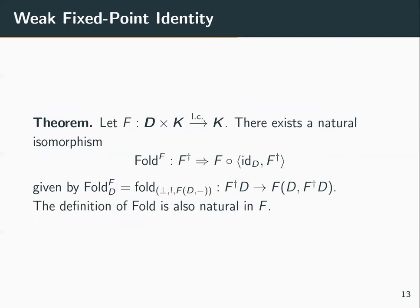Parametrized fixed point operators typically satisfy the fixed point identity. In the case of functors, we have a fixed point identity but only up to natural isomorphism. Given a functor F from D × K to K, we have a natural isomorphism fold(F) from F† to the unrolling — that is, the composition of F with its dagger — whose components are given by the fold isomorphisms. The definition of fold is natural in F.